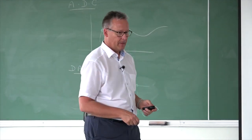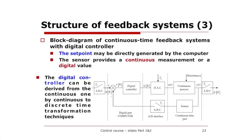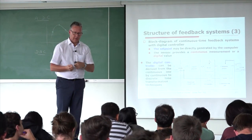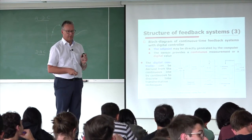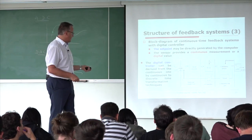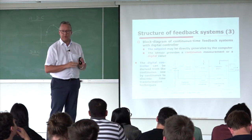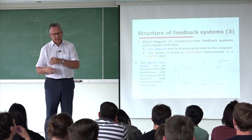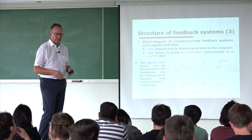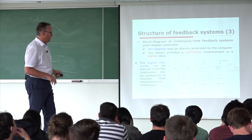The digital controller can be derived from the continuous one — you start with designing a continuous controller and then transform it to digital form for implementation in a computer. In the future, if you continue in control, you can find control strategies only in discrete time with no equivalent in continuous time, such as predictive control, adaptive control, or robust control. These are advanced controls special for discrete time, but that's not what we will do now.